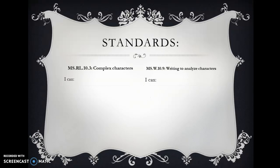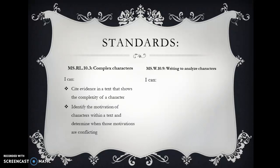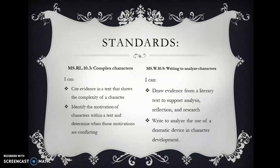The standards we will address today are Mississippi Reading for Literature 10.3, to do with complex characters. You will cite evidence in a text that shows the complexity of a character, identify the motivation of characters and determine when those motivations are conflicting. On the writing side, we address Mississippi Writing 10.9 — writing to analyze characters — drawing evidence from a literary text to support analysis, reflection, and research, and writing to analyze the use of soliloquy as a dramatic device in character development.